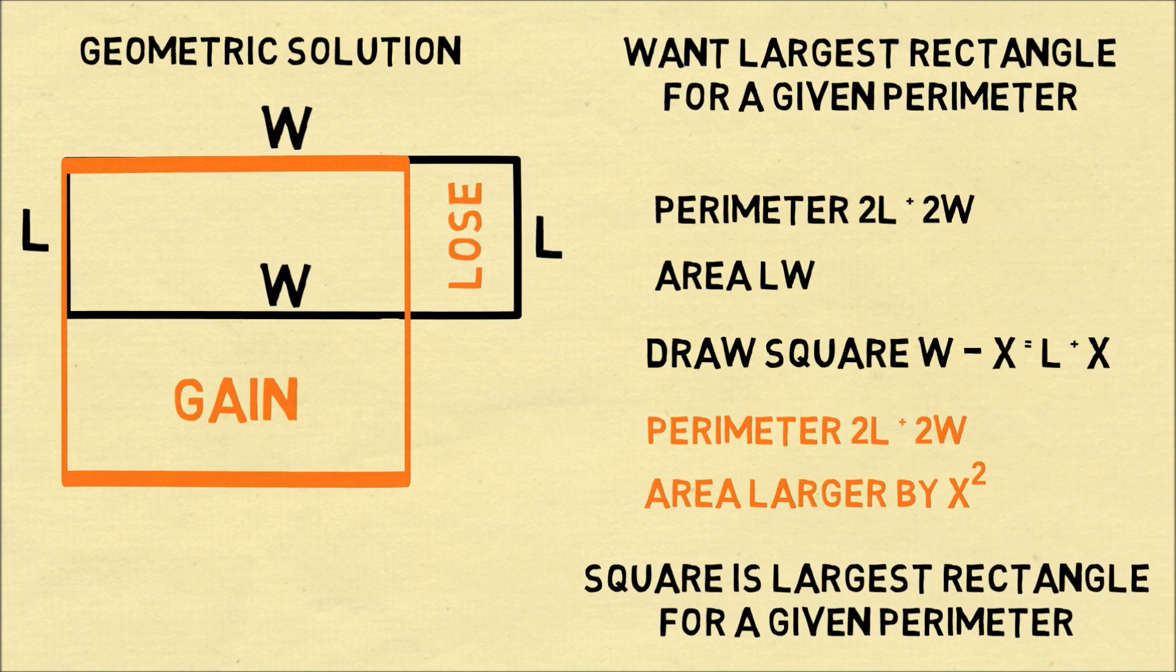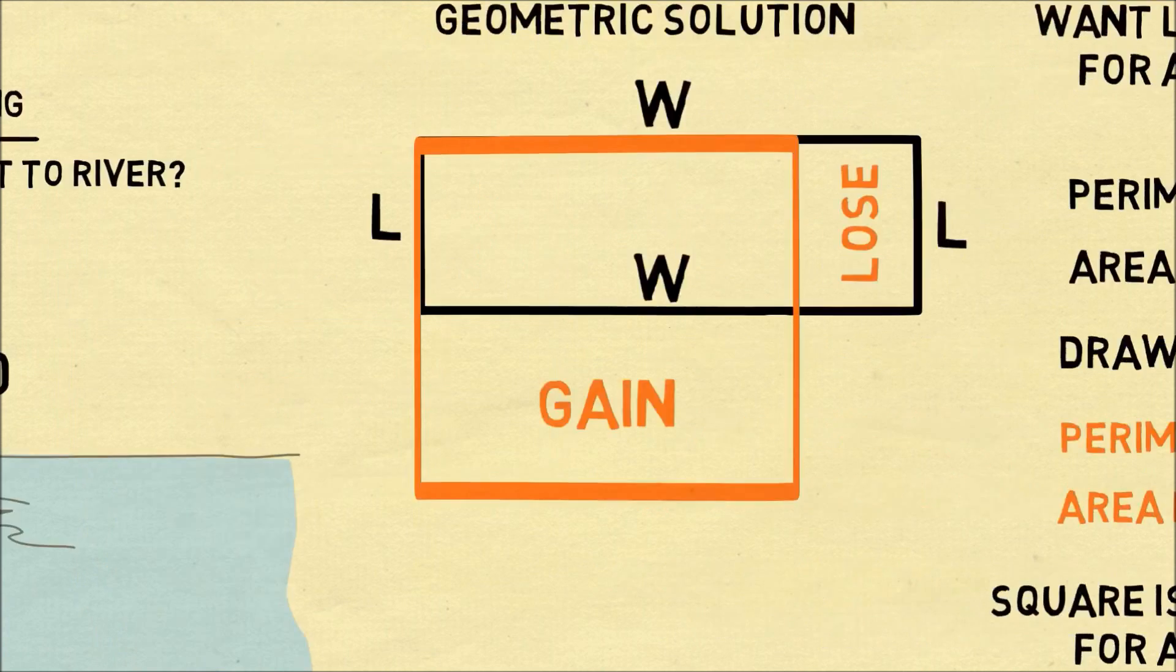So what this shows is that the square is actually the largest rectangle you can have for a given perimeter because if you have a rectangle that's not a square you can always make it a square and that'll be the largest area you can have.